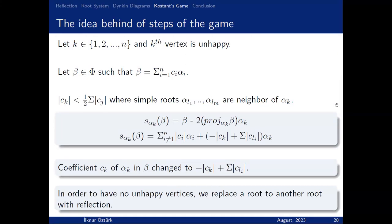We played a game on Dynkin diagrams, and Dynkin diagrams are associated to root systems. So the rules must be meaningful. Let's examine the idea behind the steps of the game. To examine this, let's start with an unhappy vertex and do a reflection. In that case, we reflect θ with respect to H_{α_k}. What I mean: H_{α_k} has a normal vector α_k. Now after this reflection, we obtain this. We can observe that at the beginning, the coefficient of α_k is c_k. But now this has changed to this, as we did in the game. So we say that the rules of the game come from reflection. To have no unhappy vertices, we replace one root with another root.